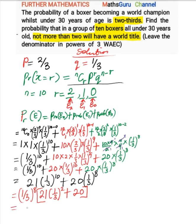We can further expand this as (1/3)^8 times: 21 times (1/3)^2, where (1/3)^2 is the same as (1/3) times (1/3), plus 20.